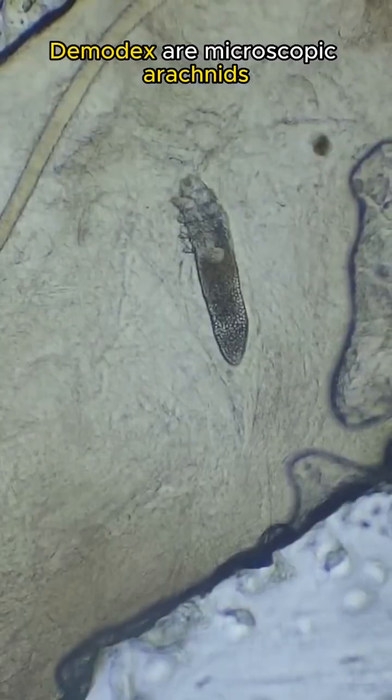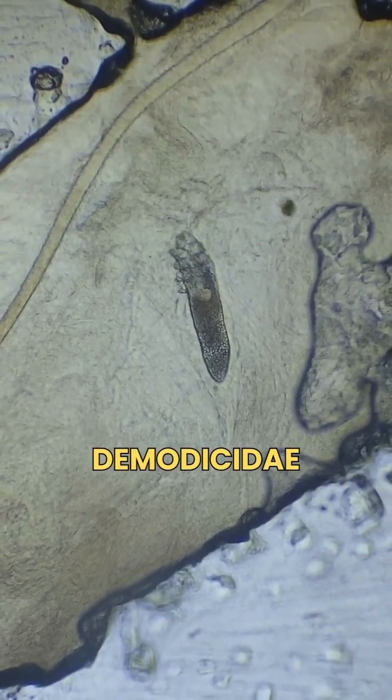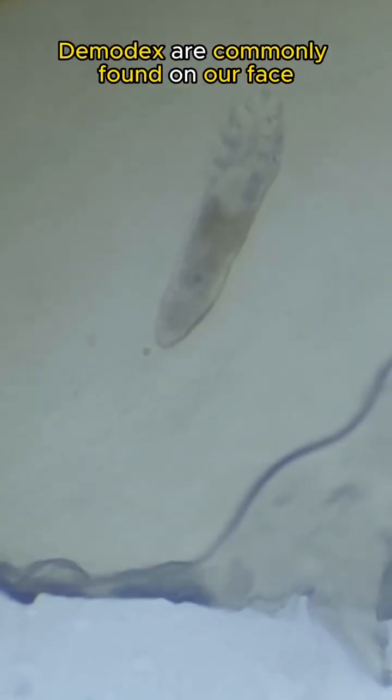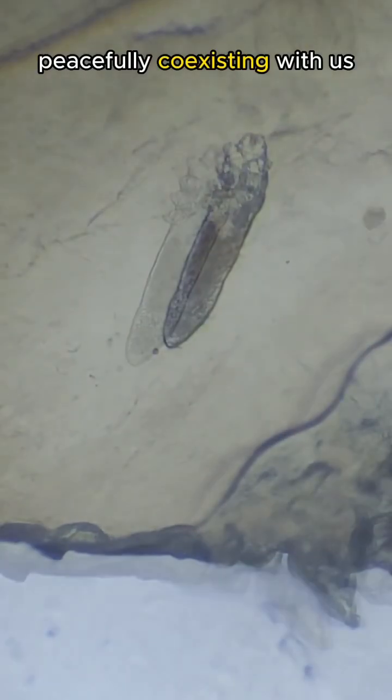Demodex are microscopic arachnids belonging to the family Demodexidae. Demodex are commonly found on our face, peacefully coexisting with us.